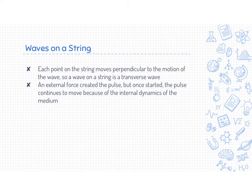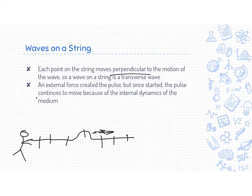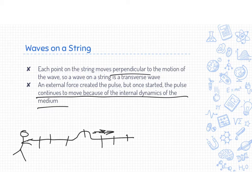Every point on that string is moving perpendicular to the motion of the wave, confirming a string is a transverse wave. As that wave travels out, every point on the string experiences that energy, causing it to go up and down. Some external force — maybe a person — created that pulse, but once started, the pulse continues to move. It's like when you say something, you can't take it back — there's no way to stop that energy once it goes out.